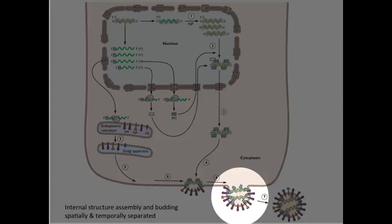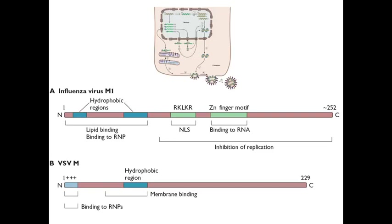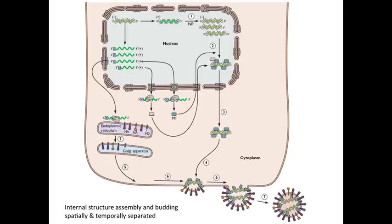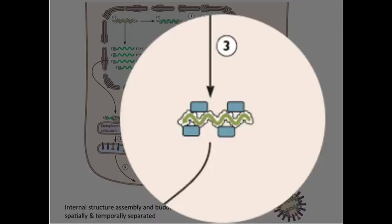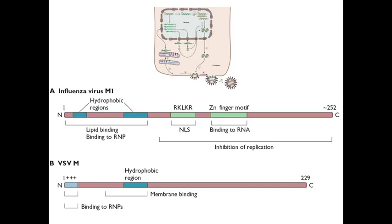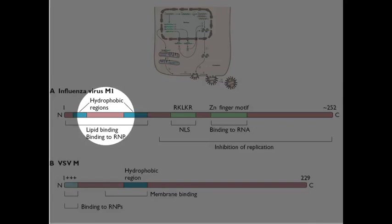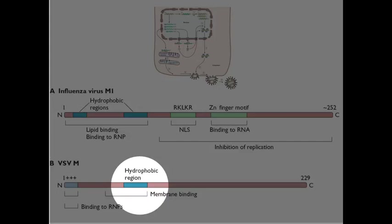Then you have formation of a bud, and that is driven only by the HA — although of course you want to incorporate the RNA as well. These viral proteins that drive budding go to the membrane by specific signals. The M protein is attached to the viral RNA and is driven to the membrane by very specific hydrophobic regions, as you can see here for influenza virus.